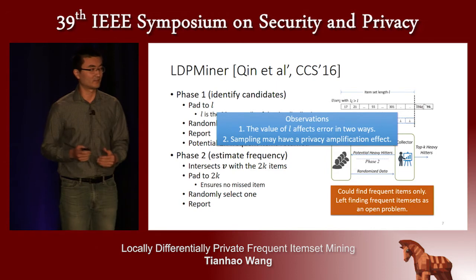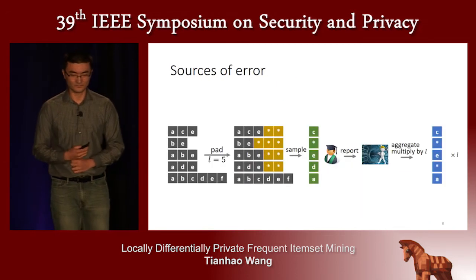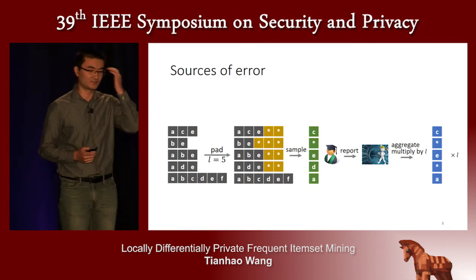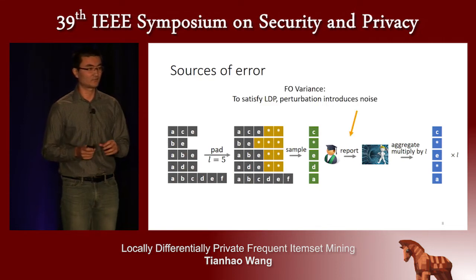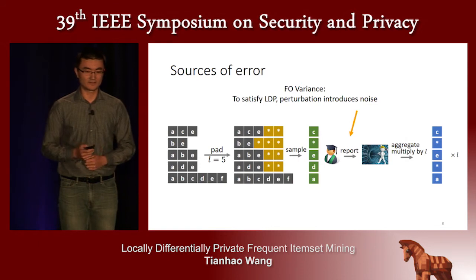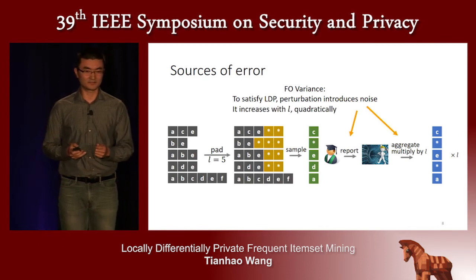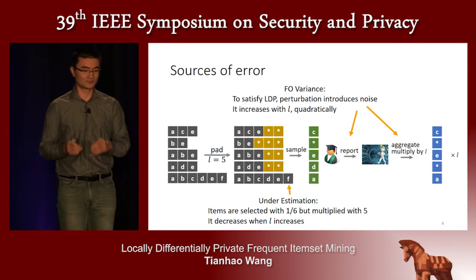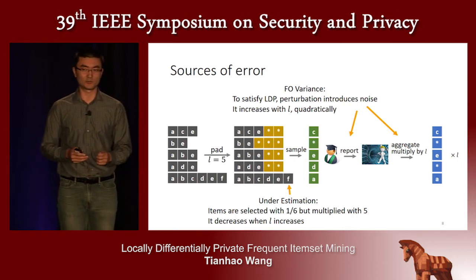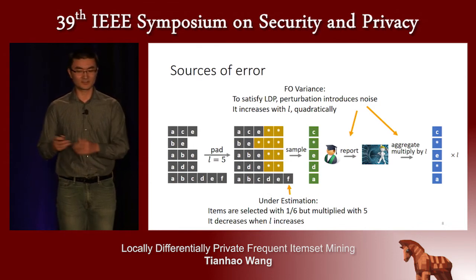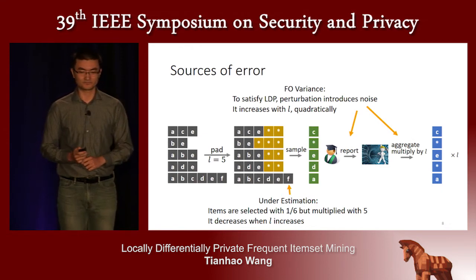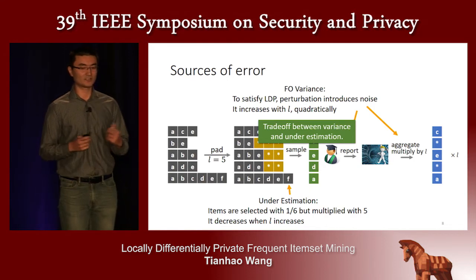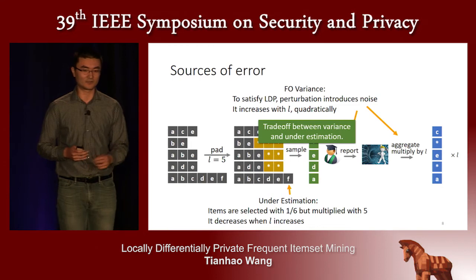Because LDP Miner does not choose optimal parameters, we have two observations that will increase its utility. The first observation is that there are two sources of errors. The first is the variance of the frequency oracle: because each user has to perturb their value, this introduces noise, and the variance increases with the size L. Another source is an underestimation effect — if the last user has six values, each is sampled with probability 1/6, but the result is multiplied by only 5, creating underestimation.